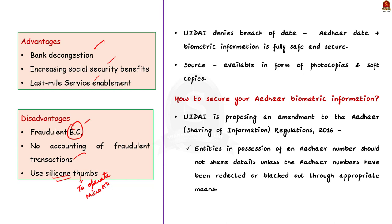One might wonder where cyber criminals get authenticated biometric information. The UIDAI — the government agency managing Aadhaar — has denied any breach of data and said that Aadhaar data including biometric information is fully safe and secure. However, UIDAI's database is not the only source from where data can be leaked. Aadhaar numbers are readily available as photocopies and soft copies, and criminals use Aadhaar-Enabled Payment Systems to breach user information. The UIDAI is proposing an amendment to the Aadhaar Sharing of Information Regulations 2016, requiring entities in possession of an Aadhaar number to not share details unless the Aadhaar number has been redacted or blacked out, both in print and electronic form.